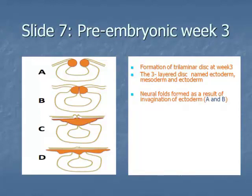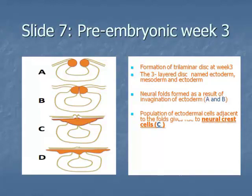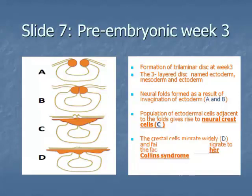Item 3: a midline groove appears as a result of invagination of the ectoderm central layer and simultaneous elevation of ectodermal tissue alongside the groove to form the neural folds. These folds then fuse with each other in the midline, beginning at the junction of the future brain and spinal cord, to form the neural tube.